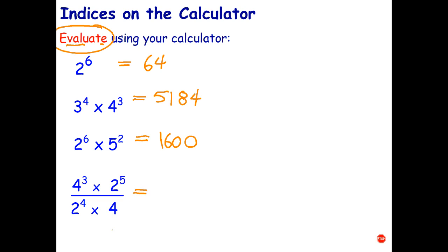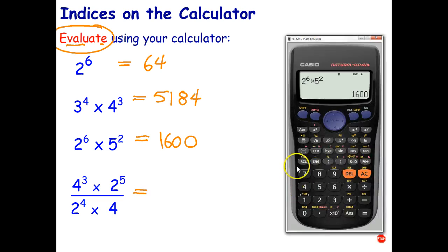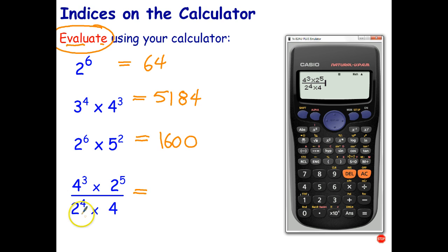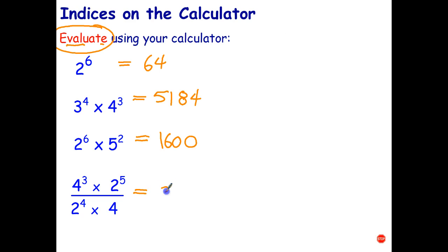Most modern scientific calculators have a fraction button, so I'd certainly use that if you have one — it makes things much easier. So: 4 raised to the power of 3, arrow across, times 2 raised to the power of 5, down arrow, 2 to the power of 4, arrow across, times 4. A smart thing to do with more complicated expressions like this is double-check that what you've entered matches the question, then press equals — and that gives us 32.